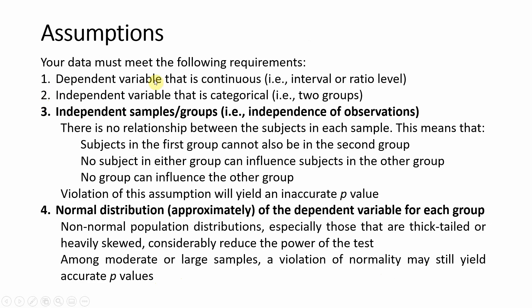The assumptions of the independent sample t-test are: the dependent variable must be on an interval or ratio scale; the independent variable must be categorical with two groups; and there must be independence of observations. This means subjects in the first group cannot also be in the second group, no subject can influence subjects in the other group, and the groups must be independent of each other — otherwise this will yield an inaccurate p-value.